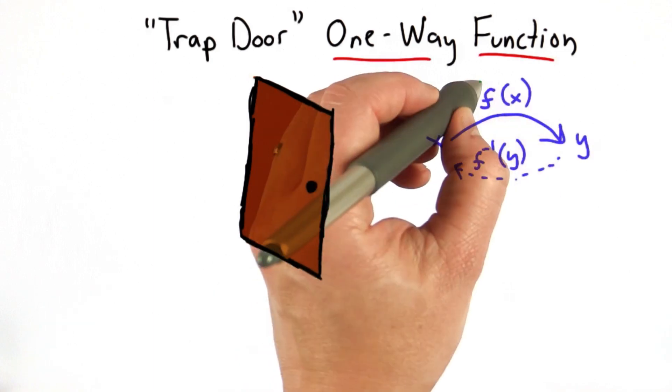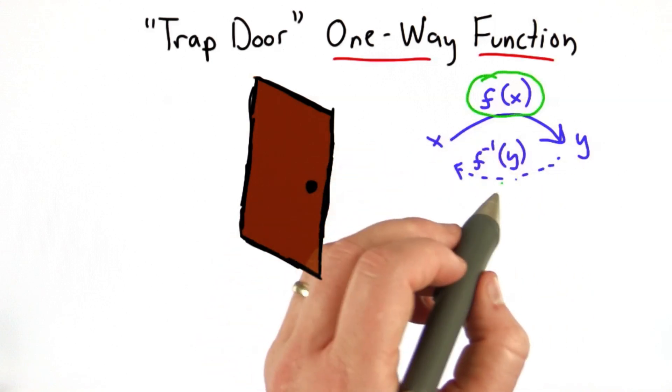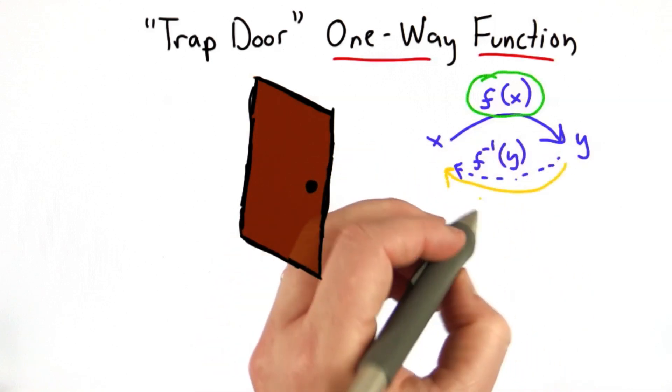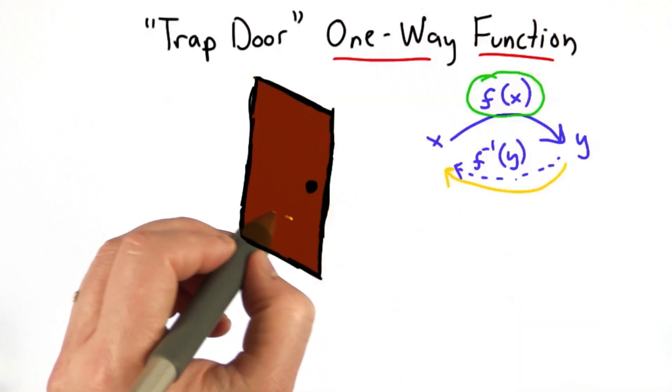With asymmetric crypto, what we need to reveal is this function. We want the reverse to still be hard, but we want some way to be able to do the reverse easily if we know some secret. So that's our trapdoor.